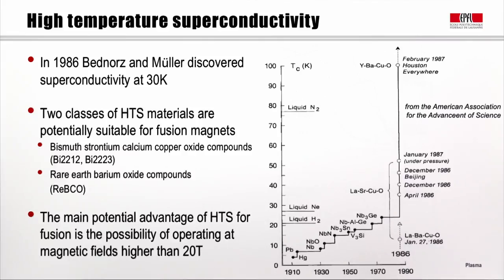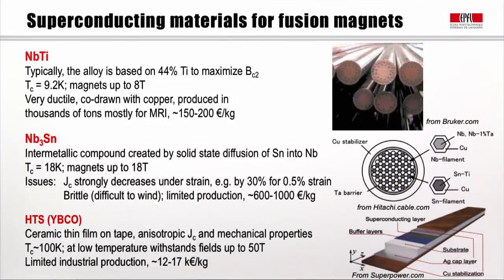The main potential advantage of HTS for fusion is not so much the high critical temperature, but the possibility of operating at very high magnetic fields — higher than 20 Tesla. Adding to the list, we have the new class HTS, for example yttrium BCO, which are ceramic thin films on tape. These unfortunately bring anisotropic properties in terms of both mechanical aspects and current density, so the design must take this into account. The critical temperature is very high — 100 degrees Kelvin — but we need to cool to low temperatures to exploit the high fields; at low temperatures this conductor can withstand fields up to 50 Tesla. It's a new technology with very limited industrial production and a very high cost of the order of 12 to 17 thousand euros per kilogram.